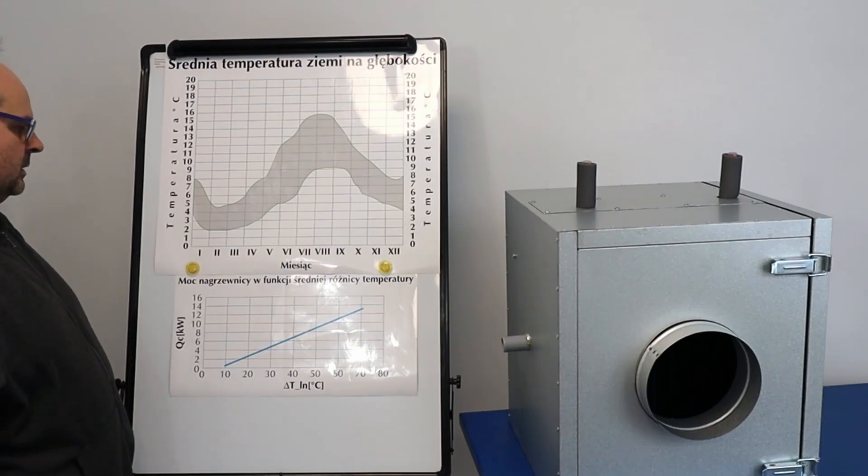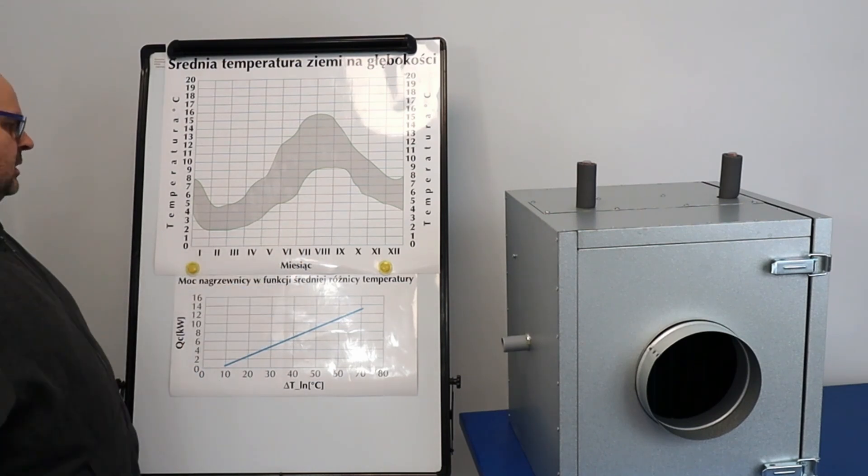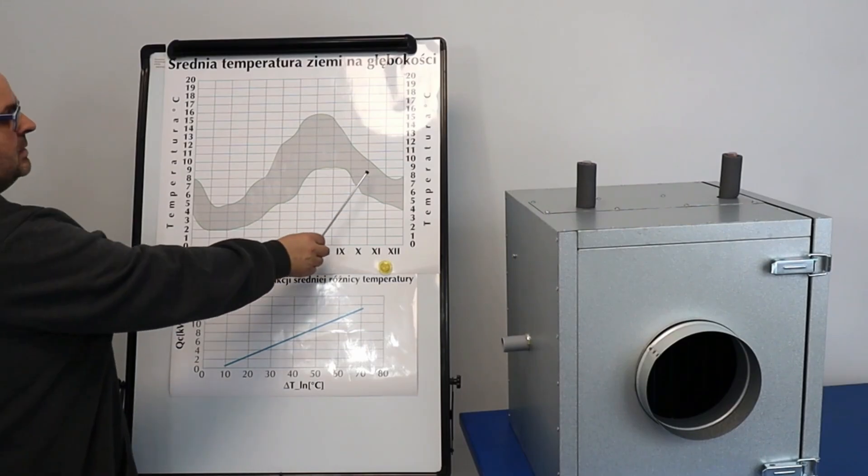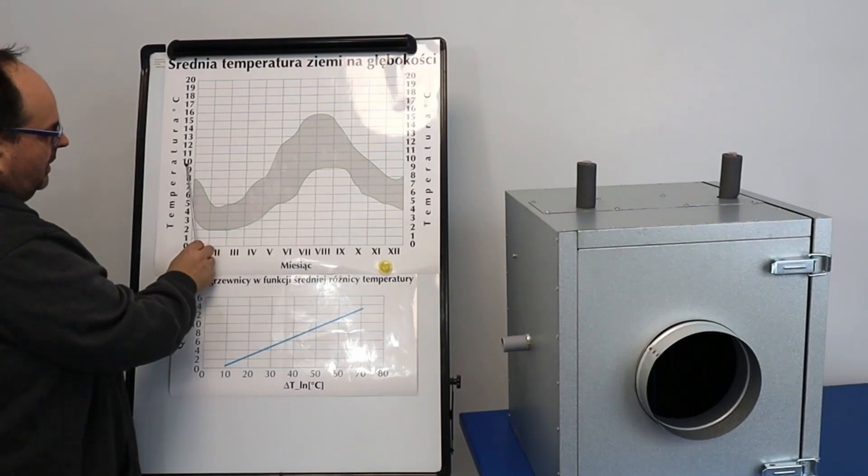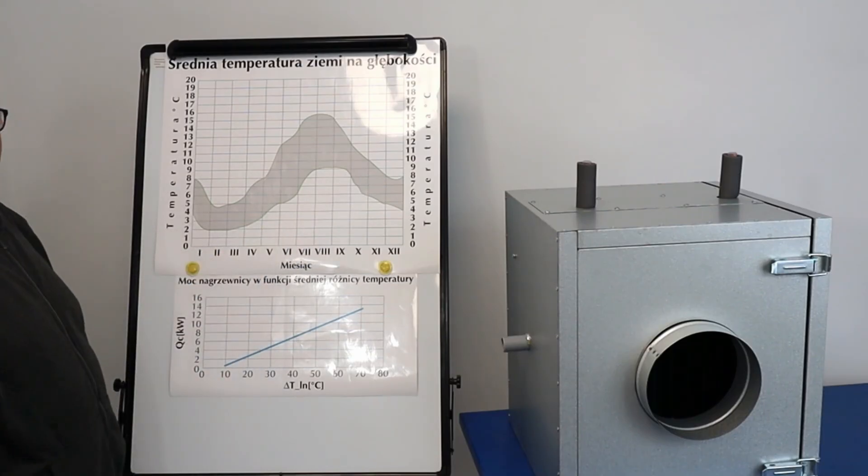I did this based on about 50 different measurements in various places and based on experience. We once made a temperature recorder and tested it at a depth of one meter sixty. And that's roughly how it looks. This is a general characteristic. We can't look at it as a perfect thing because each year has a different summer, a different winter, a different spring, a different temperature distribution.